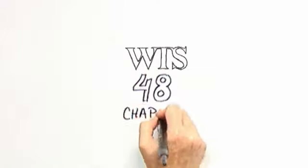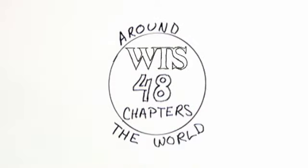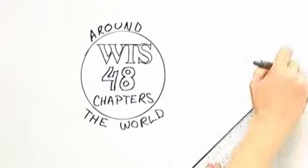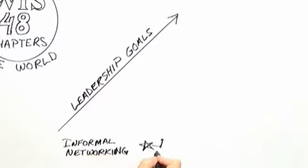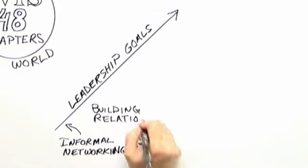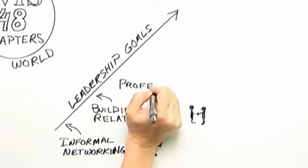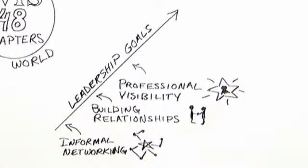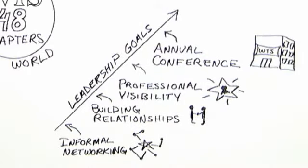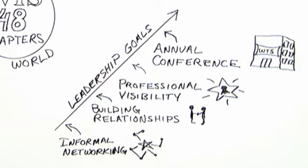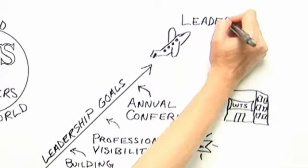WTS, through its 48 chapters around the world, also provides opportunities for women to develop a clear heading for their leadership goals. These opportunities come in many forms, from informal networking to building relationships and alliances with other members to create professional visibility and attending the annual conference. Each opportunity helps maintain a flight path of progression to leadership in the industry.